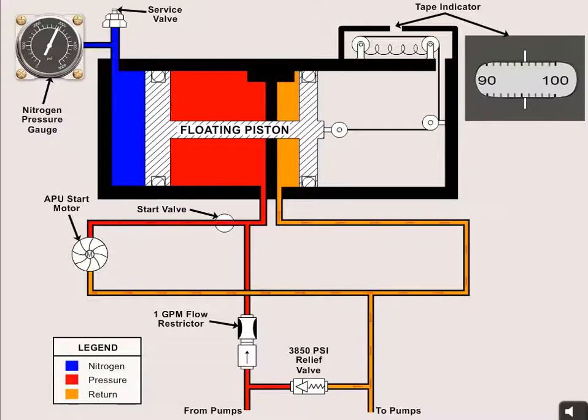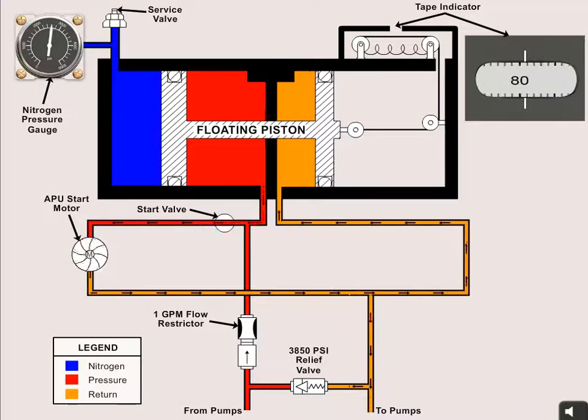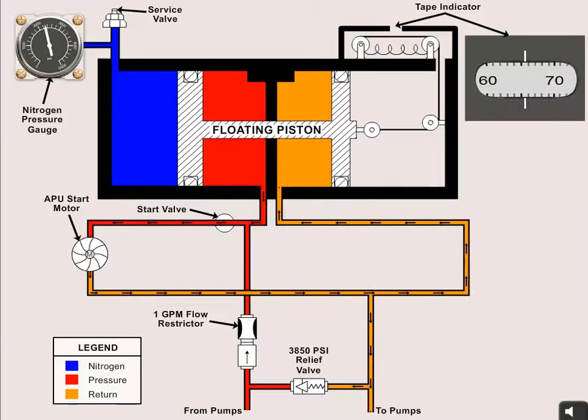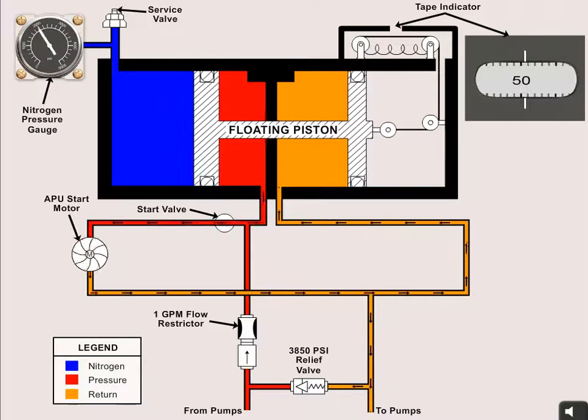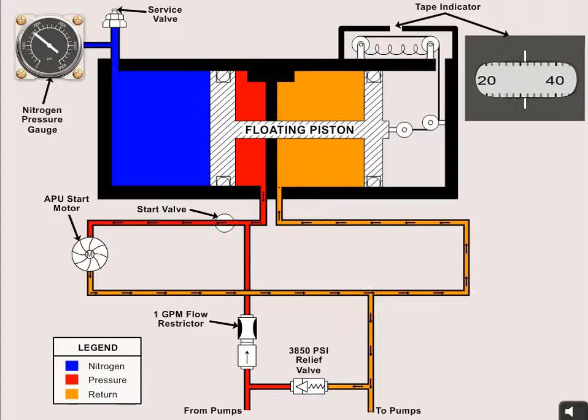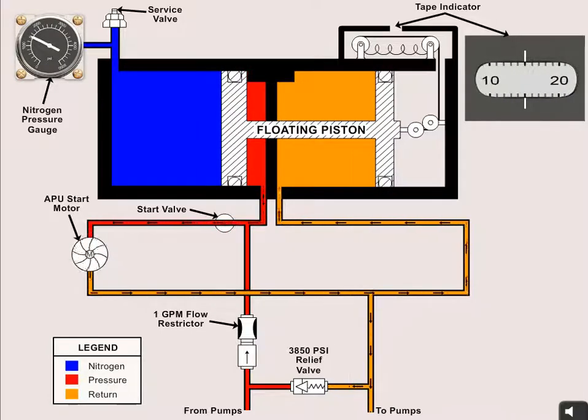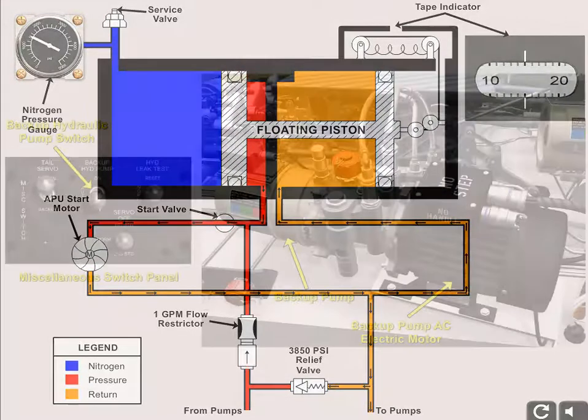When the APU switch is turned on, the ESU sends a start command to the APU hydraulic start valve. The valve opens and releases the accumulator's hydraulic charge, which spins the APU start motor that rotates the APU compressor and fuel pump.